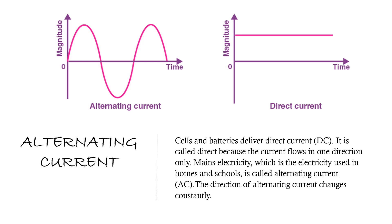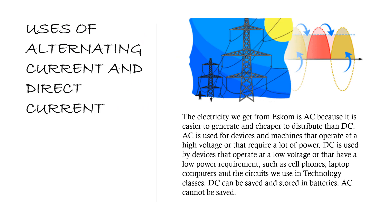Now let's look at alternating current. Cells and batteries deliver direct current, DC. It is called direct because the current flows in one direction only. Mains electricity, which is the electricity used in homes and schools, is called alternating current, AC. The direction of alternating current changes constantly.